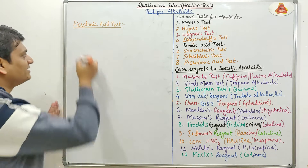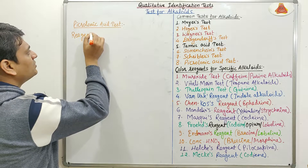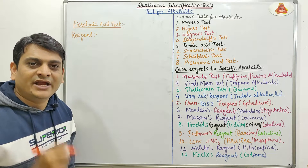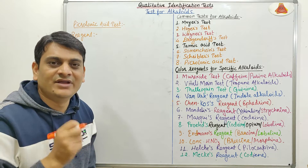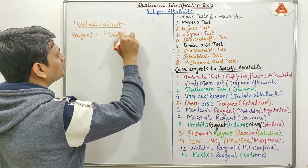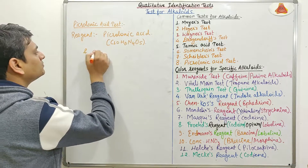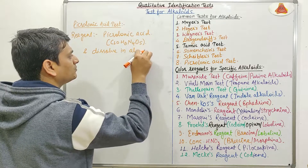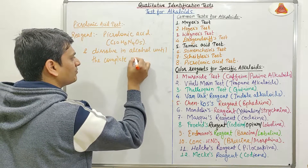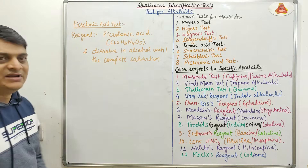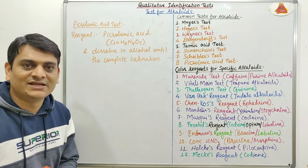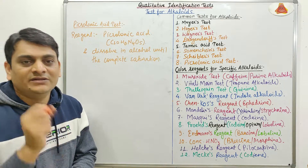In this test, first we have to prepare the reagent for Picrolonic Acid test. For preparation of this reagent, first we will take the Picrolonic Acid and we will dissolve that Picrolonic Acid in alcohol until saturation. Ultimately we can say that saturated Picrolonic Acid in alcohol is known as Picrolonic Acid reagent.